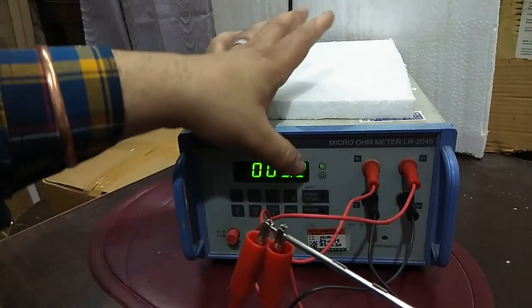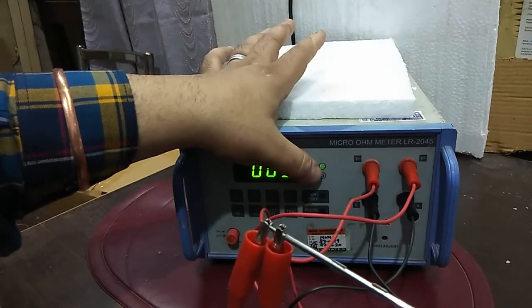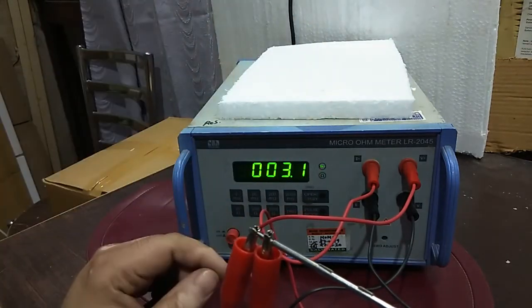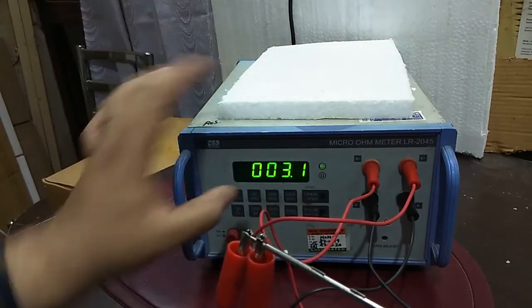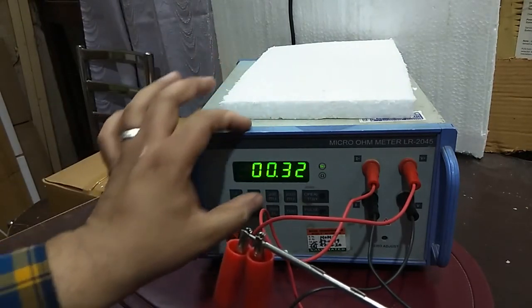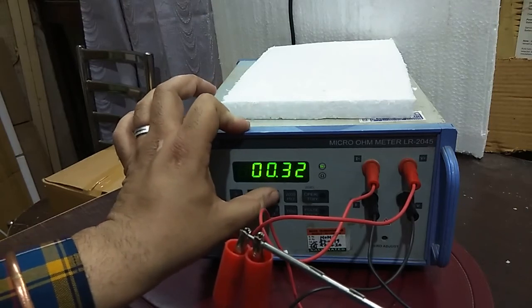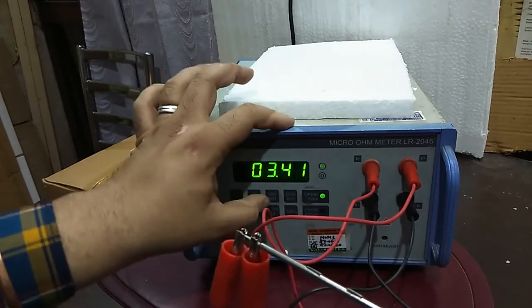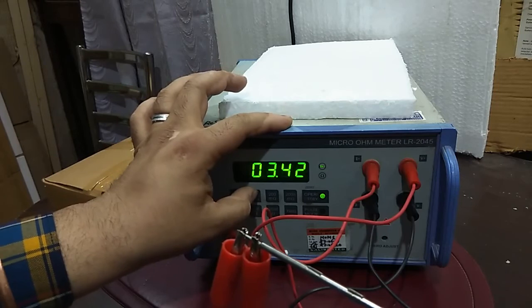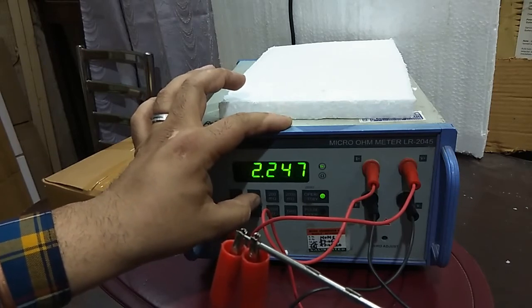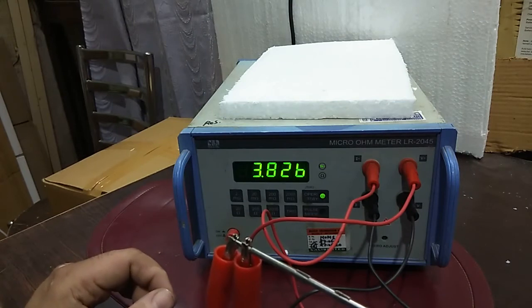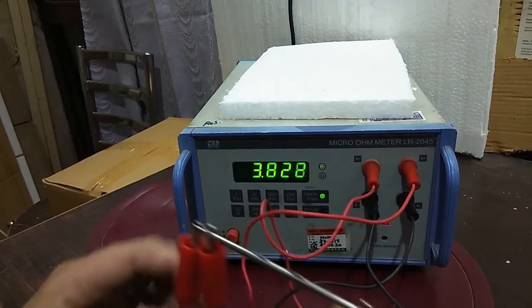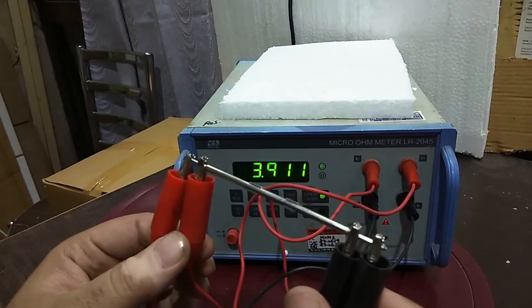See now the milliohm light is on. You can see the results. It is showing 3.1 milliohm. Let's see on the lower part. It's 3.42. It's 3.827 milliohm. The result of this metal piece is 3.8 milliohm.